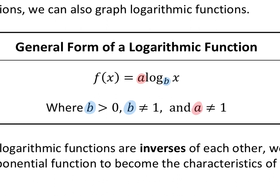The notes say that a cannot equal one — well, that's wrong. It should say a cannot equal zero. If that number in front of the logarithm was zero, zero times anything is zero, so you'd have the constant function y equal to zero, which is not a logarithm anymore. So the value in front of the log cannot be zero — it can totally be one.